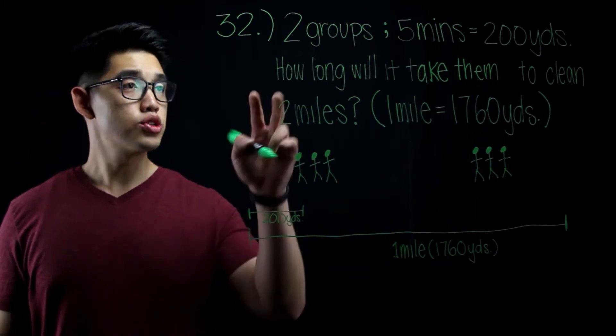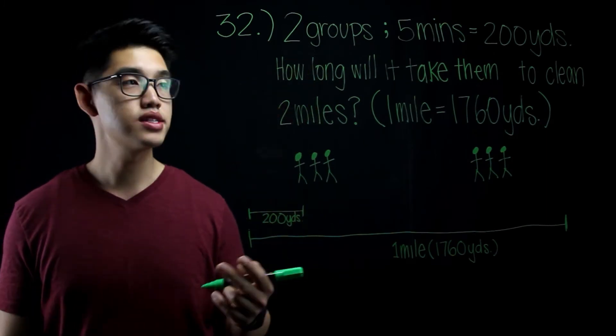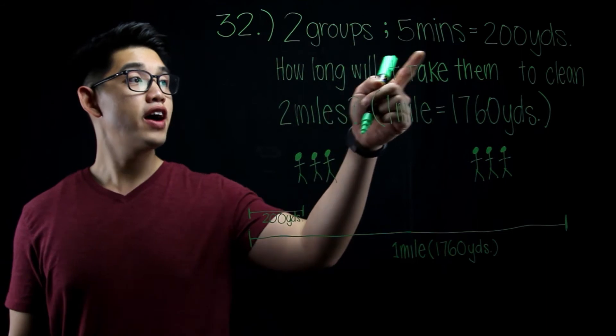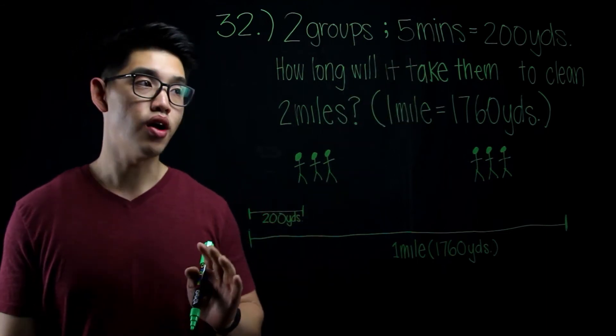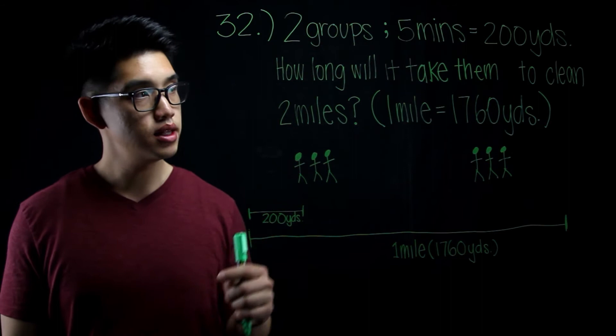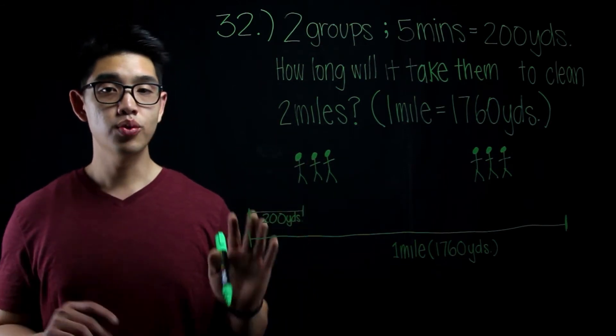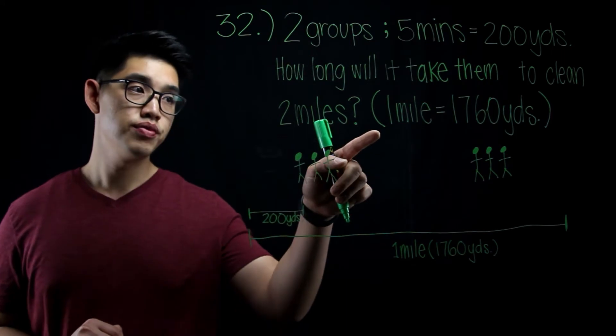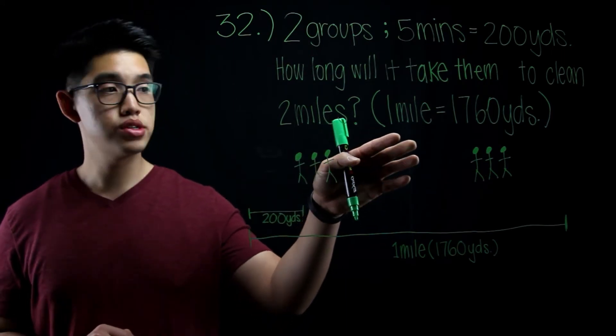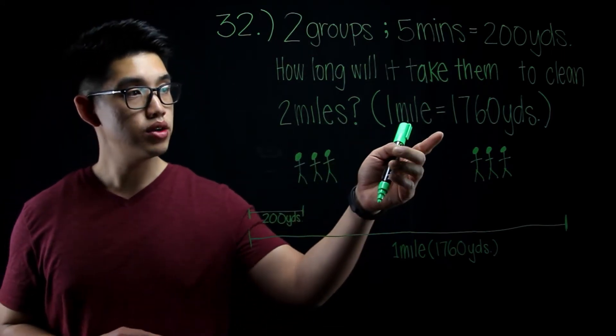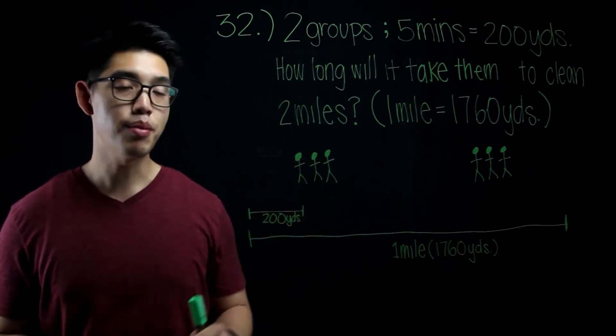Number 32 says that there are 2 groups trying to clean up litter on the side of the road. And it takes them 5 minutes to clean up 200 yards. The question basically asks, how long will it take them to clean up 2 miles? Now, before we do anything, we need to know one little fact here. If you were to Google how many yards there are in a mile, Google would tell you that there are 1,760 yards in 1 mile.